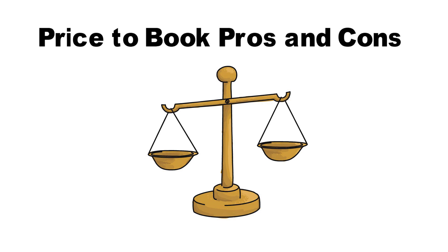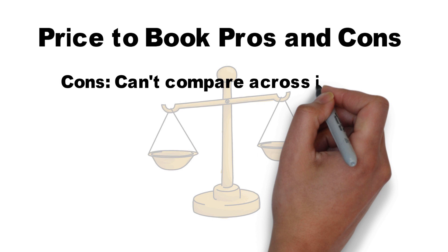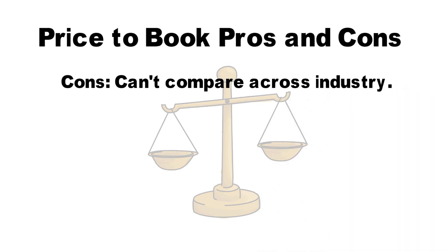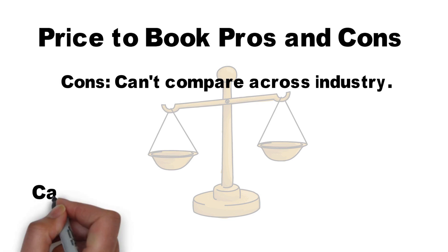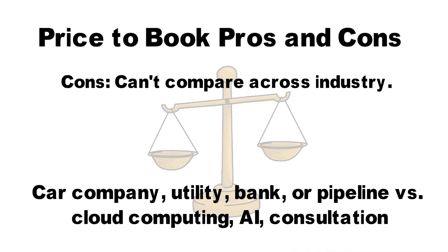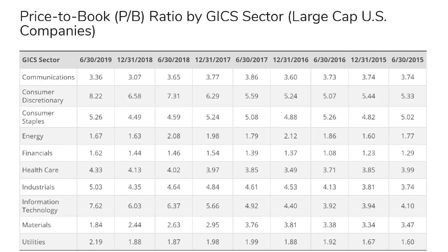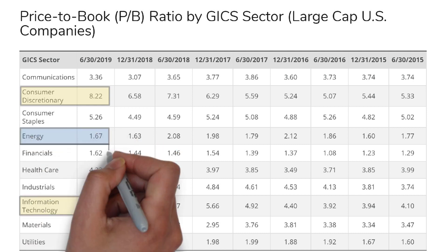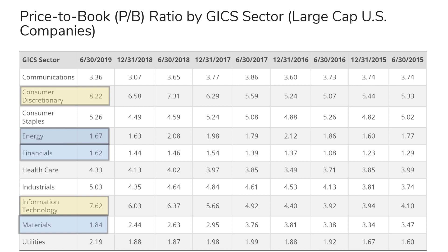Let's talk about the pros and cons of using price to book. Price to book differs significantly between industries. Service-based companies may have little need for assets compared to product-based companies. Car manufacturers, utilities, banks, and pipeline companies need large asset bases to be profitable. By contrast, cloud computing, AI, or web-based firms may generate billions with a fraction of the asset value. Industries like consumer discretionary and information technology average close to a price to book of 8, whereas energy, financials, and materials — all asset-heavy — are less than 2. This is why we want to use appropriate metrics for the companies we value.